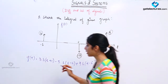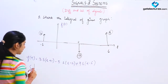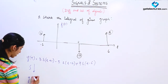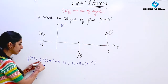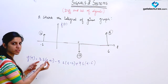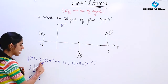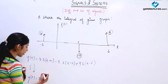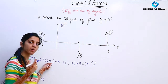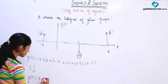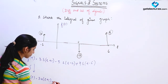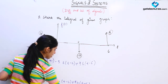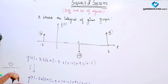Now if I integrate this function F(t), calling the result g(t): the constants remain the same. The integration of δ(t) is going to be u(t) — the step function — and the point of existence of the impulse is going to become the point of existence of the step. So this becomes 3·u(t+1) − 5·u(t−2) + 9·u(t−6), giving a step at t = −1.